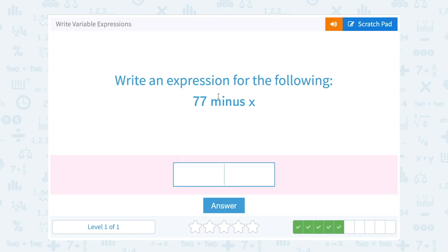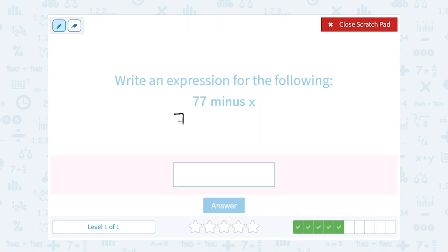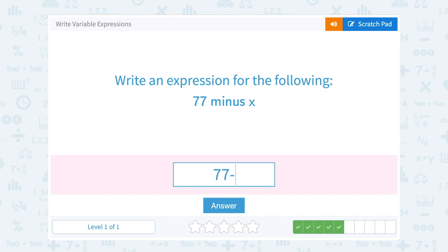Write an expression for the following, 77 minus x. Well, the wording of this one is a little different, right? We're starting out with 77, and then we're going to subtract or say minus x. So this one, we're going to keep the order that it's in. 77 minus x.